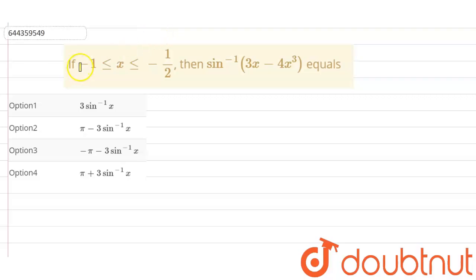Okay guys, let's start this question. X is between minus 1 to minus 1 by 2. Then we have to find that the sine inverse 3x minus 4x cube. Right, we have to find the value of this.